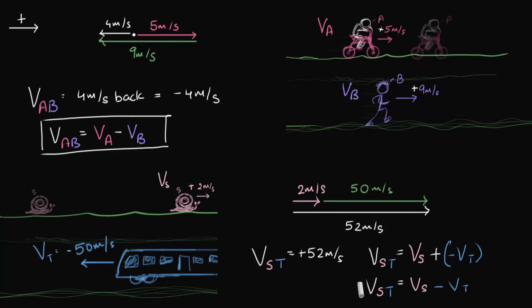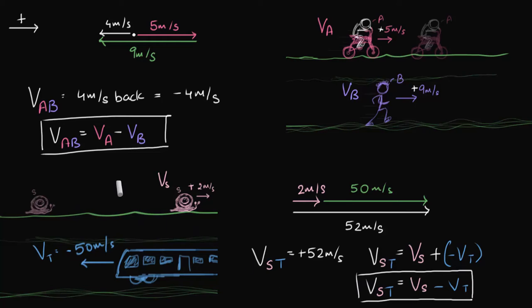Ta-da! There we have it — that's our formula for the second case. We built a formula for relative velocity of objects traveling in the same direction, and now also for objects traveling in opposite directions. But if you look at them carefully, you see we got the same formula: VAB equals VA minus VB, and Vst equals Vs minus Vt. This means we can use this as a general formula in any case.